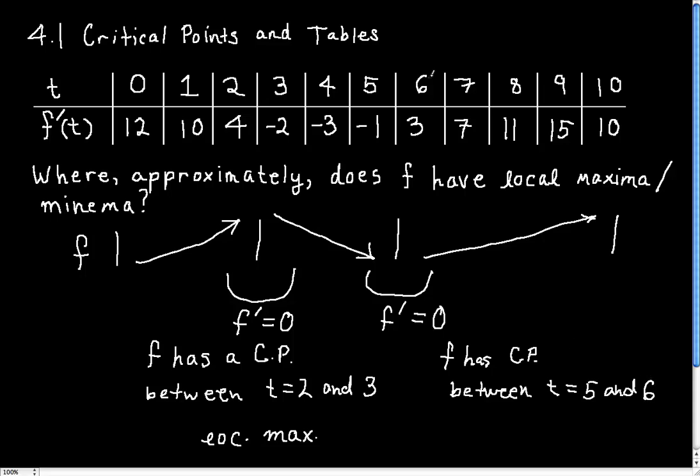And we can't say exactly where, we just know that it's probably somewhere in there. And so what kind of critical point is this? Well, if f is decreasing to the left of the critical point, and then it turns to increasing, this must be a local min. So a local min.